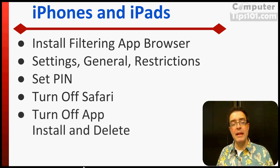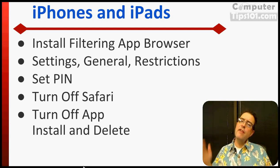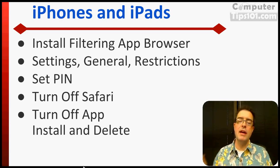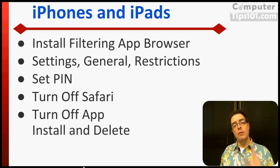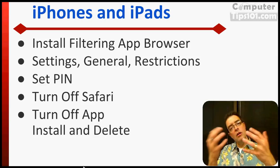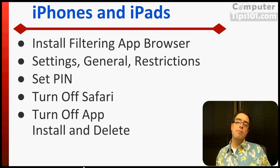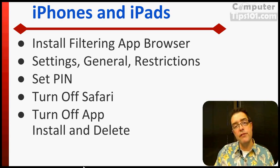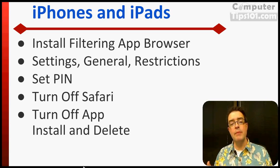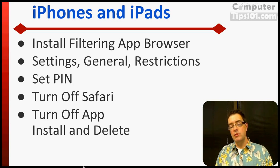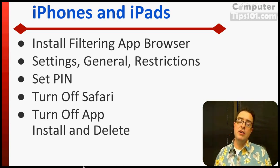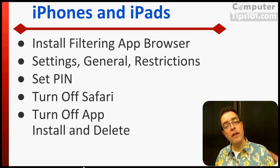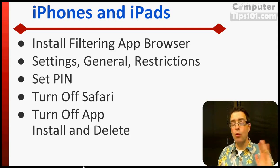Then you turn off their ability to add or remove apps. This is important because there are a lot of browsers out there that they could download and install and then look at whatever sites they want without you even knowing. So: number one, you install the browser for the filtering software; number two, you go into the restrictions and turn off Safari and turn off their ability to add and remove apps. Then, finally, you give it back to them. If they want to go on a web page, the only option they have is to use, in this case, the CovenantEyes browser. And it works great.